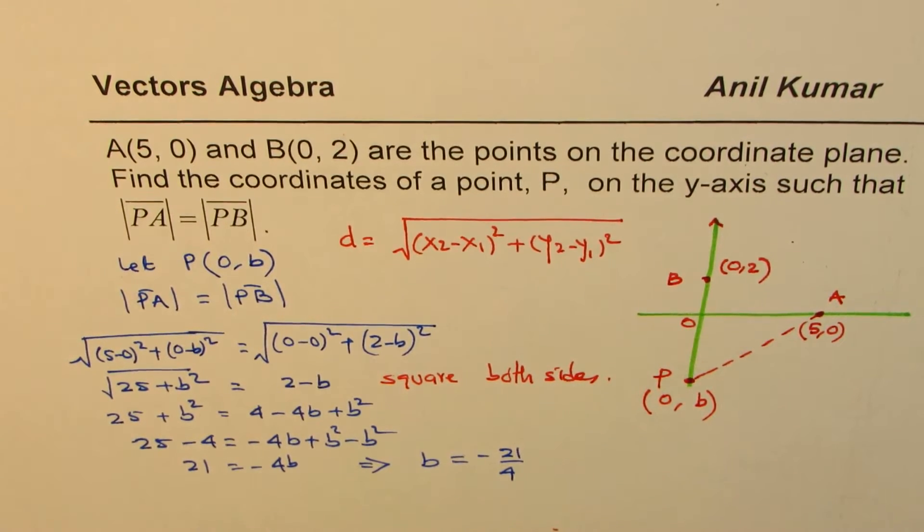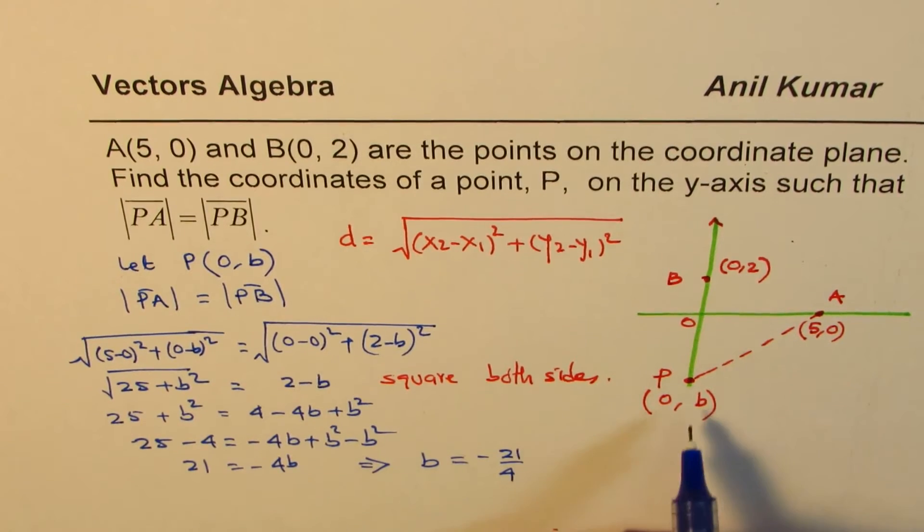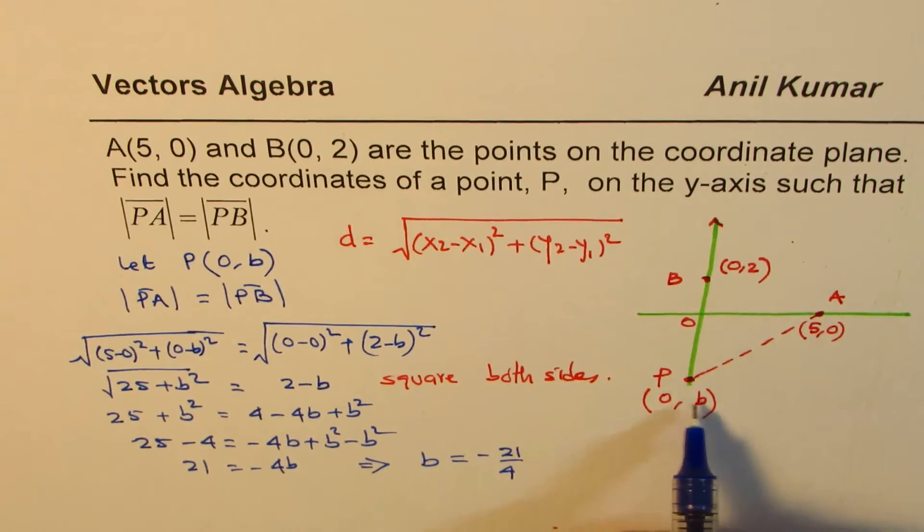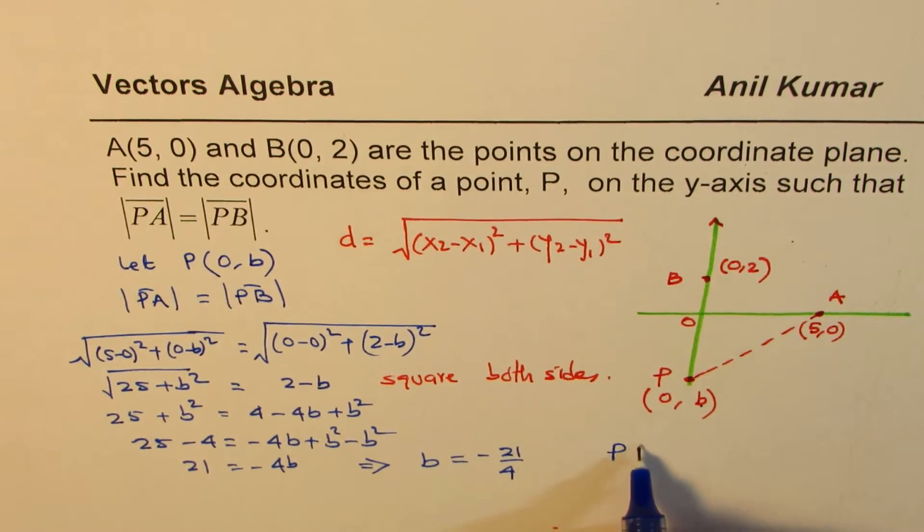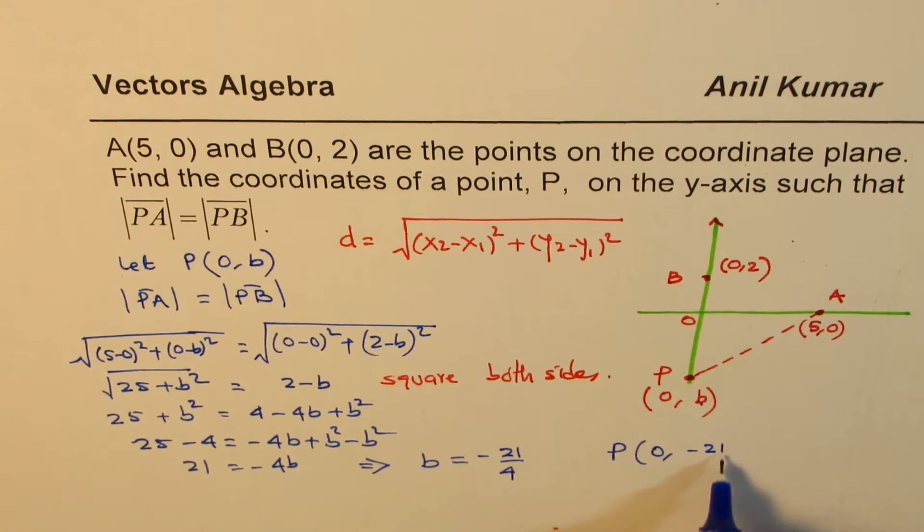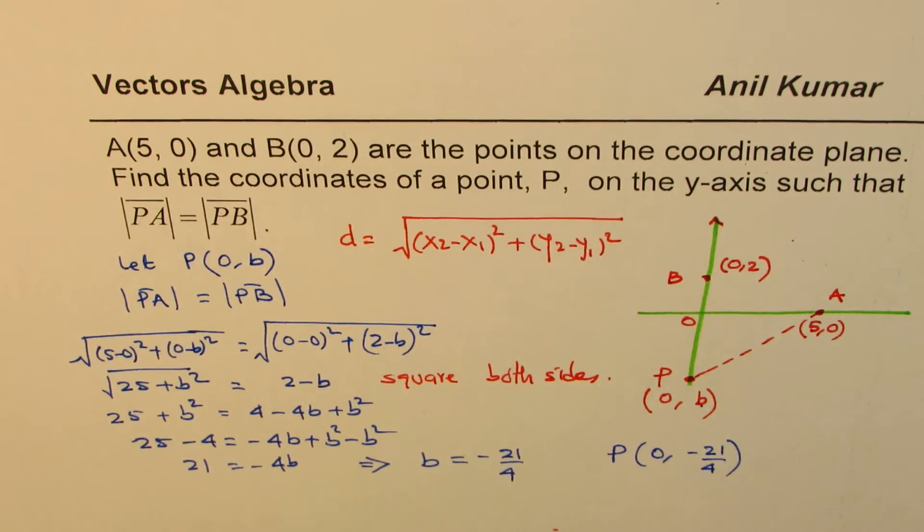So we get the point, the b coordinate, the y-coordinate as -21/4. And therefore, the answer is P is (0, -21/4). So that becomes the answer for this particular question.